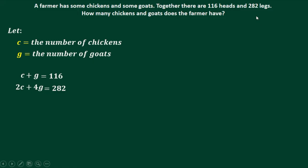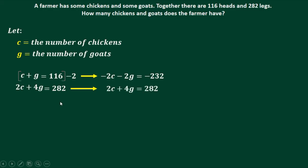Using these two equations, we'll apply the elimination method to eliminate C or G. To eliminate C, multiply the first equation by negative 2. This gives us negative 2C, negative 2G, and negative 232. Then copy the second equation and add the two equations together.